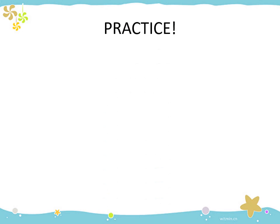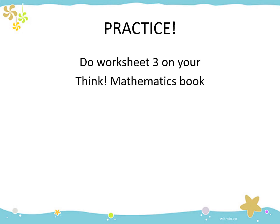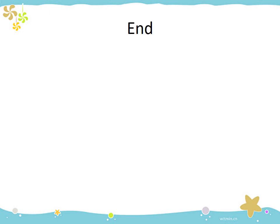After you understand how to move a turning shape with one, two, three, and four right angles, do your worksheet 3 in your Think Mathematics workbook, pages 151 to 152. This is the end of our lesson. If you have any questions, you can ask in the volunteer's YouTube channel or in our Google Classroom. See you!